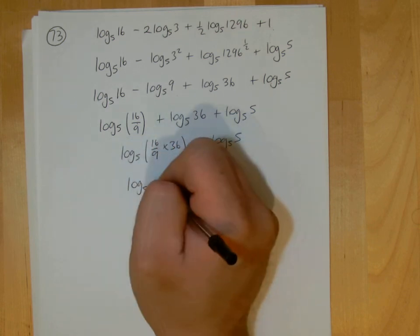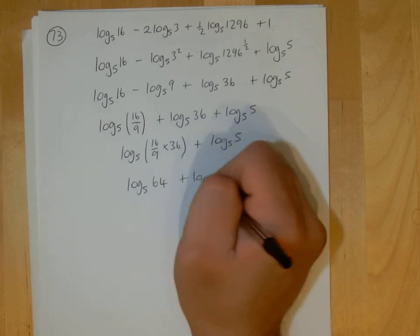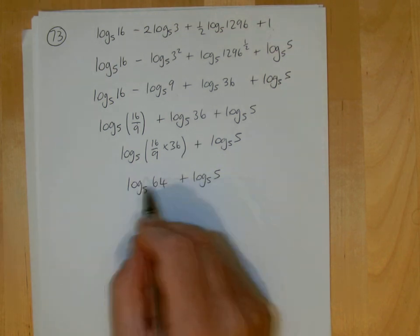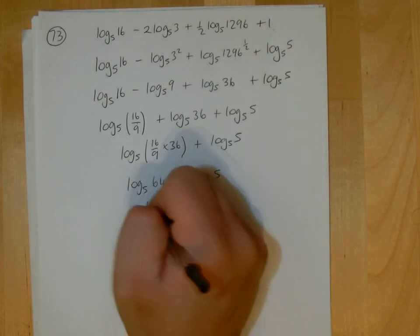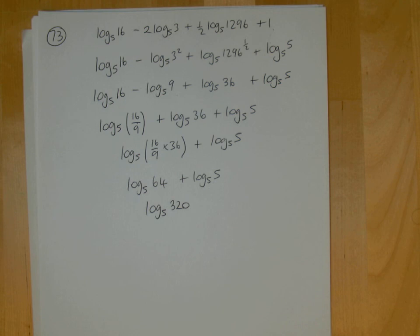Now when I work that out, that's going to be just 64 plus log base 5 of 5. And then the same rule again - when you put these together, because you're adding them, you simply times the terms. So we get our answer: log base 5 of 320.